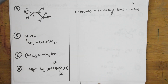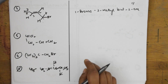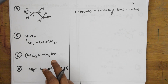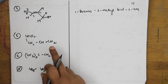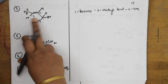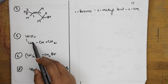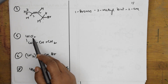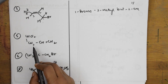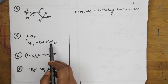So we name it 1-bromo-2-methyl — but means four carbons — with a double bond at the second position: 1-bromo-2-methylbut-2-ene. For the next compound, in the earlier case you had three chlorine atoms; here you have two chlorine atoms. First find the parent chain: one, two, three, four.